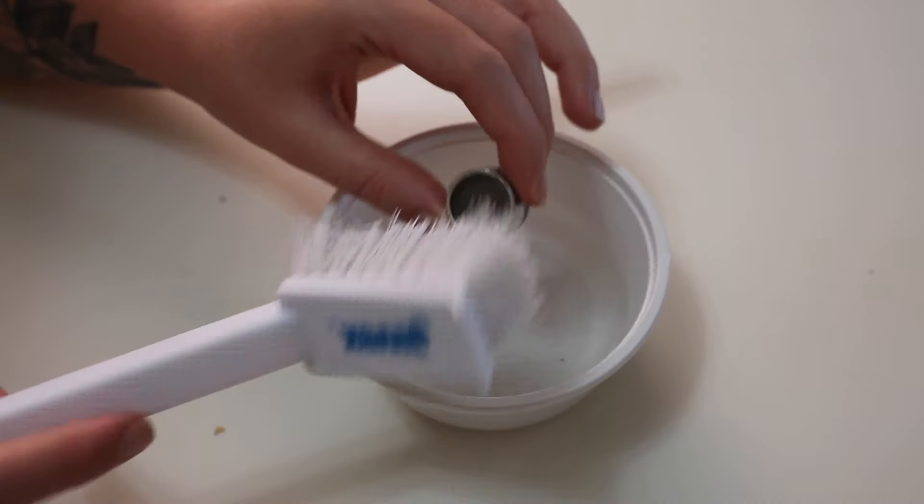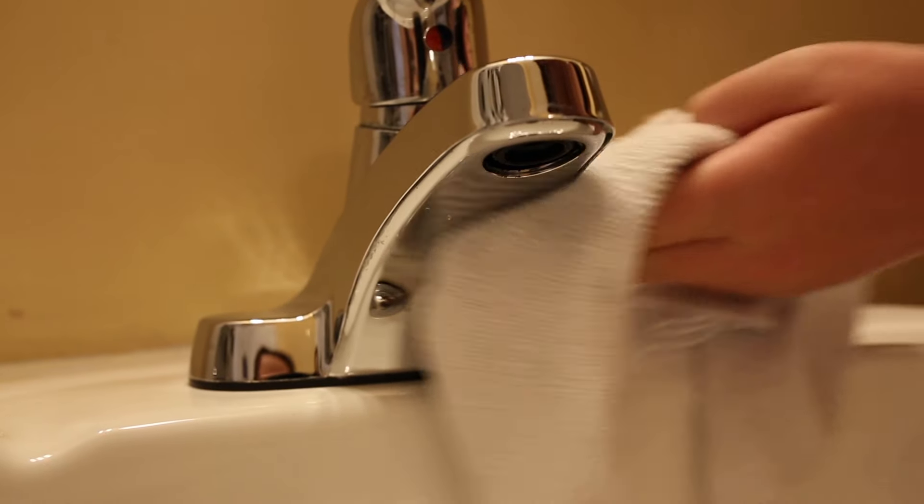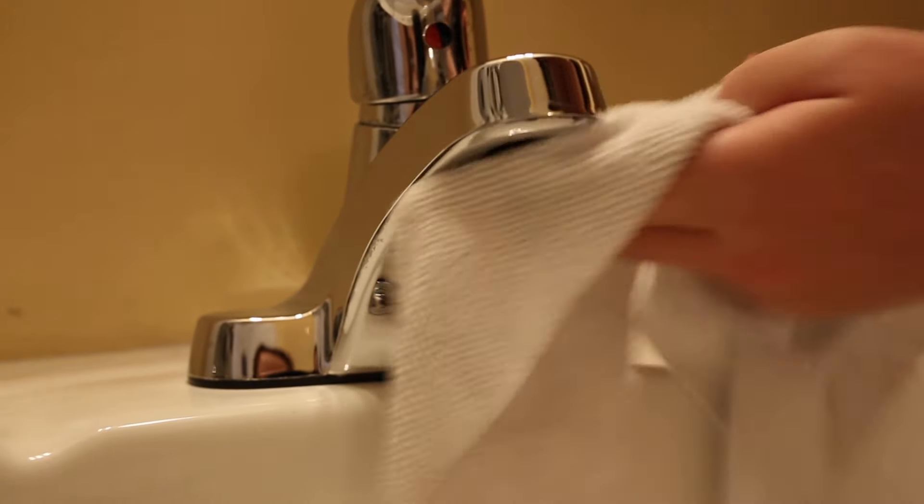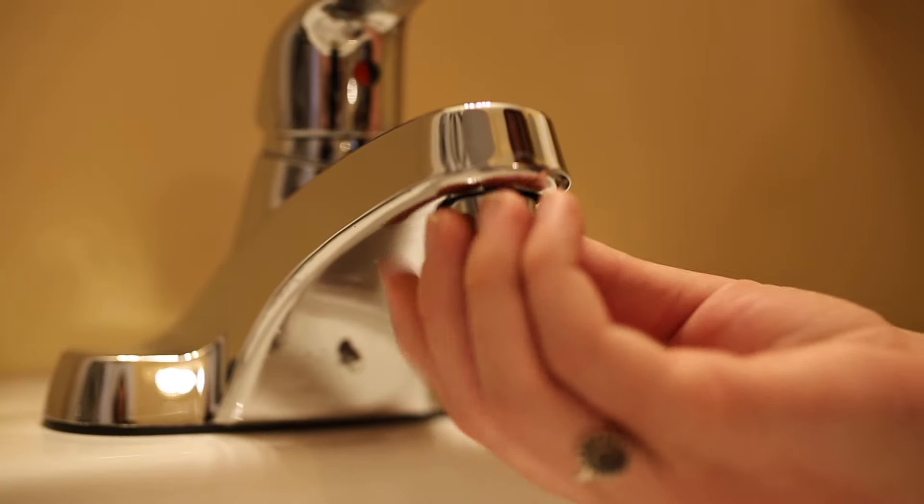Once you're done, shine up the rest of the faucet because why not, and gently screw the aerator back into place. It's honestly so simple and so satisfying, and now your sink is going to run the water in a straight line.